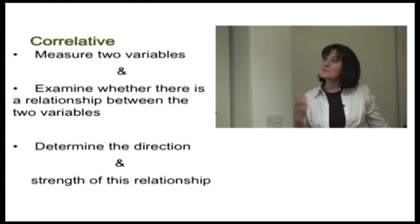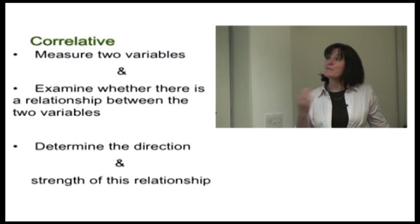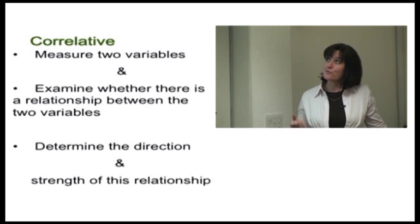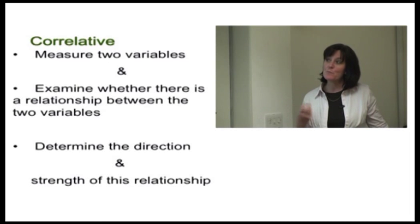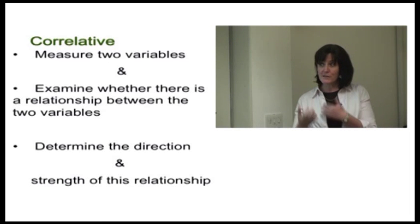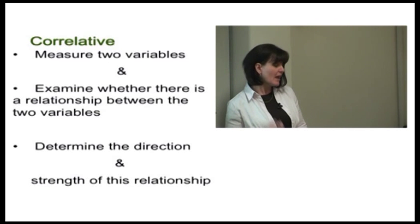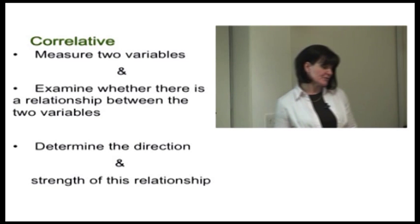So we can use different scientific strategies. If we use a correlative approach, we can examine relationships. That's contrasted with a causal approach. In a correlative approach, we measure two variables and examine whether there's a relationship between the two variables. We also try to determine the direction and the strength of this relationship.